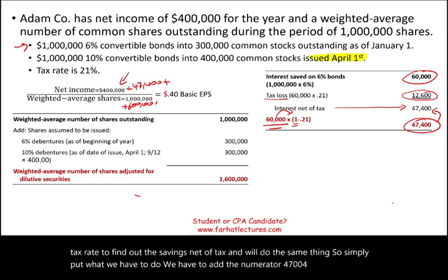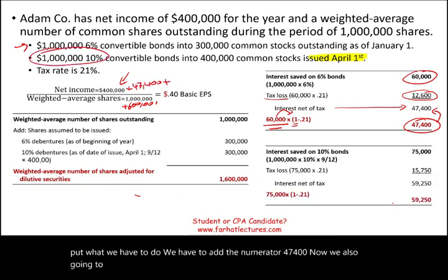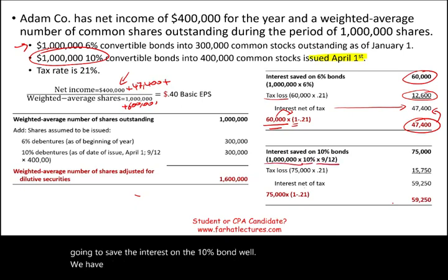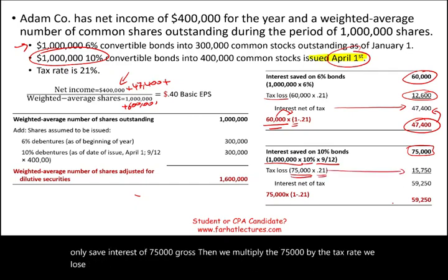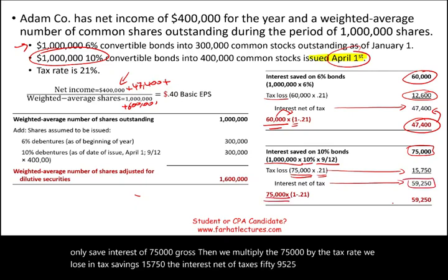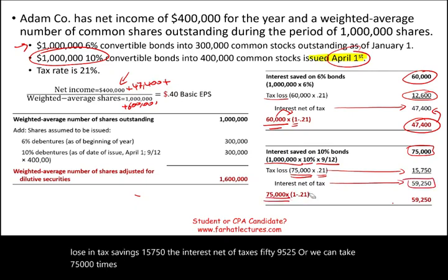We also save interest on the 10% bond: $1 million times 10% times 9/12 equals $75,000 gross interest saved. We multiply $75,000 by the tax rate of 21%, losing $15,750 in tax savings. So the interest net of tax is $75,000 times (1 minus 0.21) equals $59,250. We add $59,250 to the numerator as well.